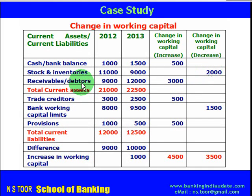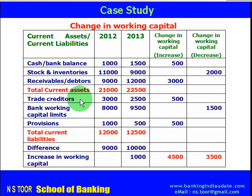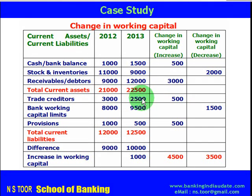Receivables or debtors increased from 9,000 to 12,000, so we have an increase in working capital. For current liabilities: trade creditors declined from 3,000 to 2,500. When a current liability decreases, it amounts to an increase in working capital, so we place it under increase in working capital. Increase in current asset is recorded as increase in working capital, whereas decrease in current liability is also recorded as increase in working capital.